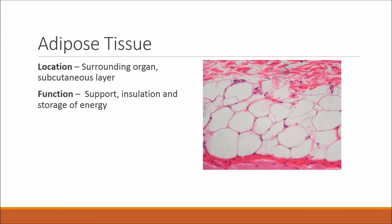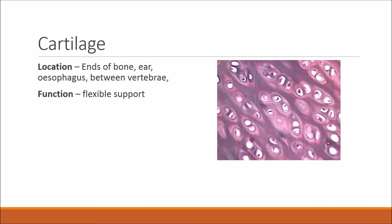Adipose tissue is located surrounding organs and in the subcutaneous layer below the skin. Its function is support, insulation, and energy storage. Cartilage is found on the ends of bones, in the ear, the oesophagus, and between vertebrae, and its function is flexible support.